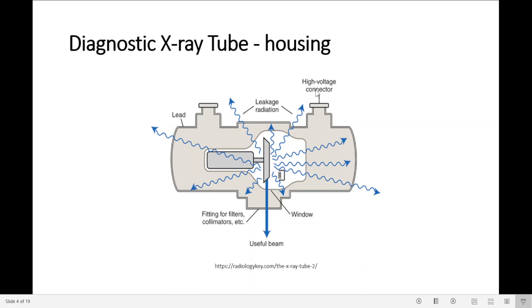Here we have the high voltage connectors, one is at the cathode side, this one is at the anode side. When high voltage is applied between the cathode and the anode, it accelerates the electrons towards the anode.